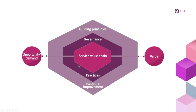The first model I'd like to show from ITIL 4 is the Service Value System — a systems-level representation of the different components in an organization that help co-create value from the opportunities and demands of its customers. Very briefly: we have guiding principles, which are a cultural compass — a central philosophy that influences how as an organization we act, behave, and make decisions.